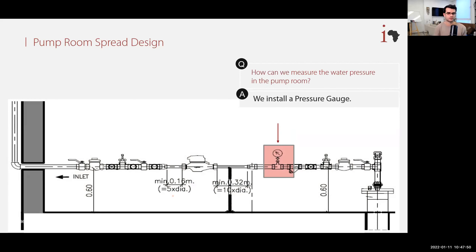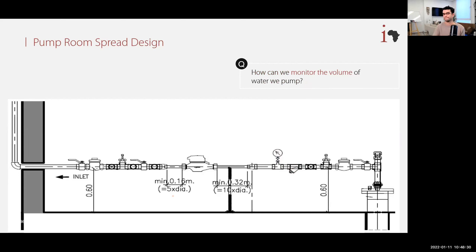It's very important to know the pressure in the pump room — to check if pipes have leaks, if the pump is working properly, or if the filter needs cleaning. We install a pressure gauge, which tells us the current pressure in the system. Its units are usually kilopascal or bar — one bar equals 100 kilopascal. Importantly, the pressure gauge must come after the screen filter, because it can get damaged by debris from the borehole.